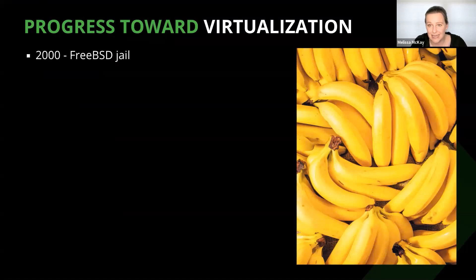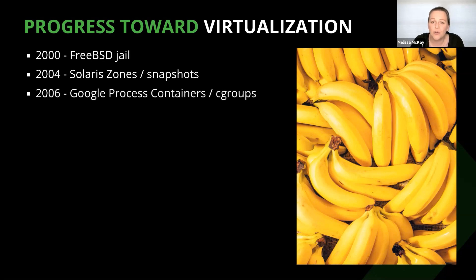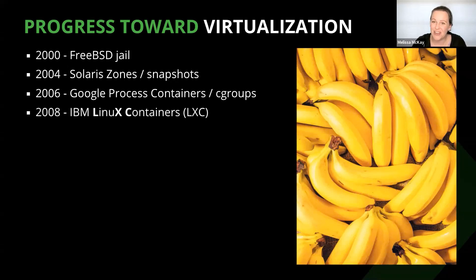The jail command was introduced by FreeBSD in 2000. Jail is more sophisticated than Chroot — its additional features help further isolate file systems, users, and networks, with the ability to assign an IP address to each jail. In 2004, Solaris Zones brought us even further by giving an application full user process and file system space and access to system hardware. Solaris Zones also introduced the idea of being able to snapshot a file system. In 2006, Google jumped in with their process containers, later renamed cgroups, which centered around isolating and limiting the resource usage of a process. In 2008, cgroups were merged into the Linux kernel, which, along with Linux namespaces, led to IBM's development of Linux containers.